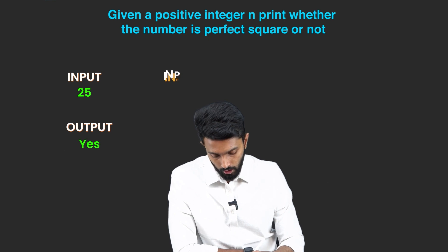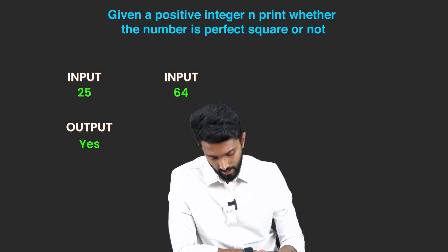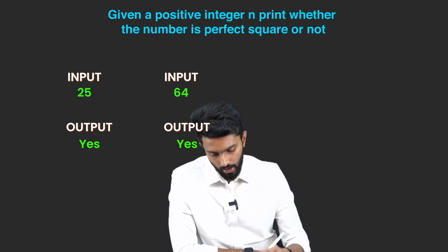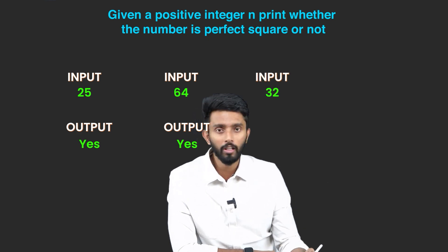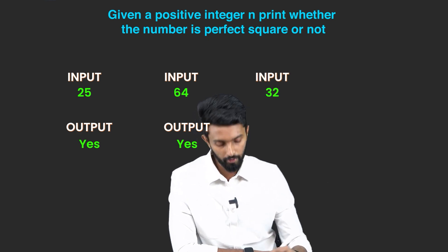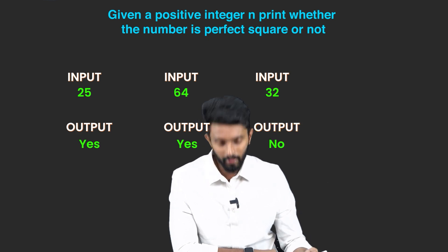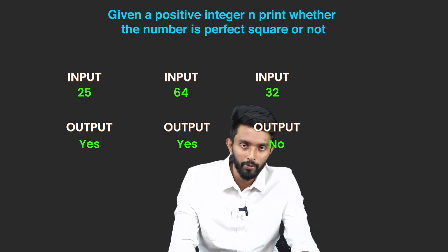If the input is 64, then 8 into 8 is 64, so the answer should be yes. If the input is 32, then 32 is not a perfect square, so the answer should be no. The expectation is clear.